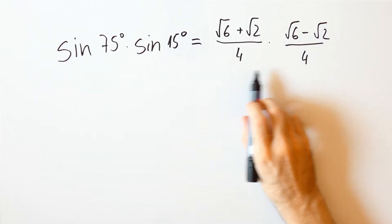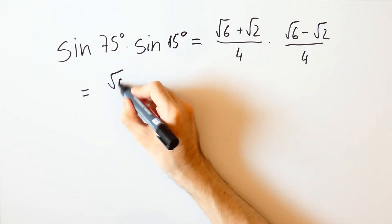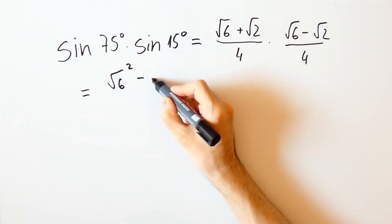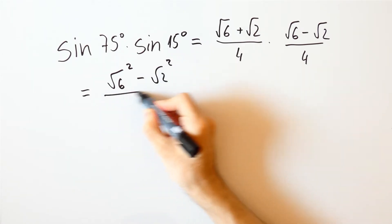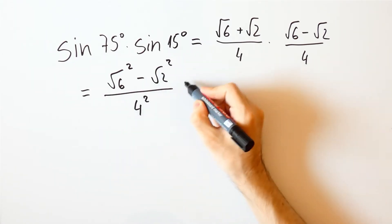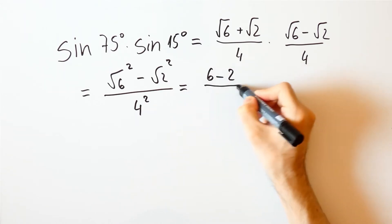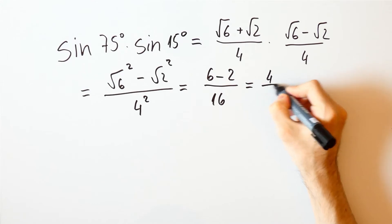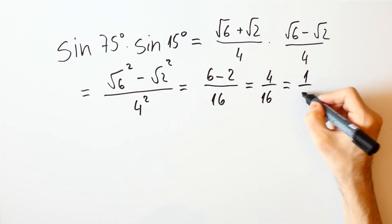So this is now equal to the square root of 6 squared minus the square root of 2 squared over 4 squared, which is equal to 6 minus 2 over 16, and that is equal to 4 over 16, which is equal to 1 over 4.